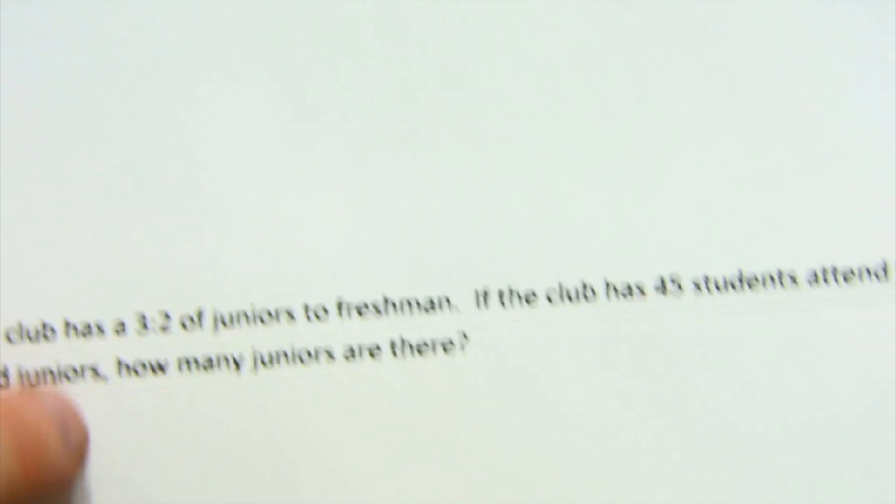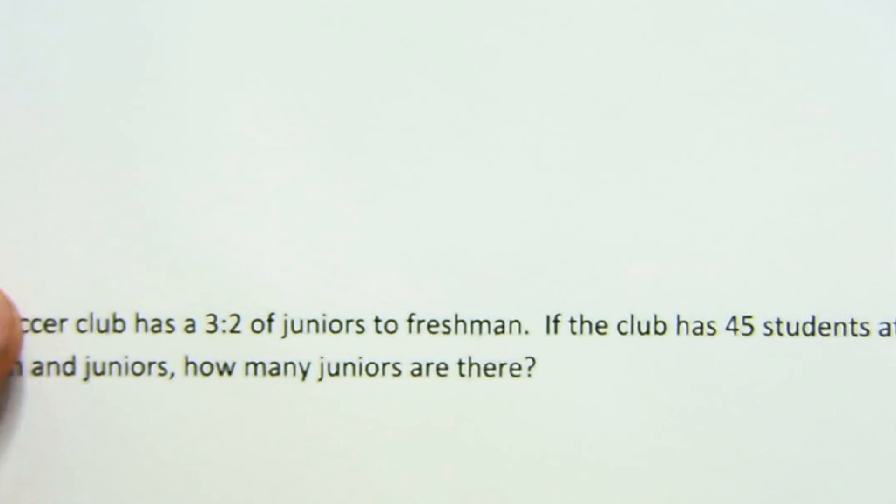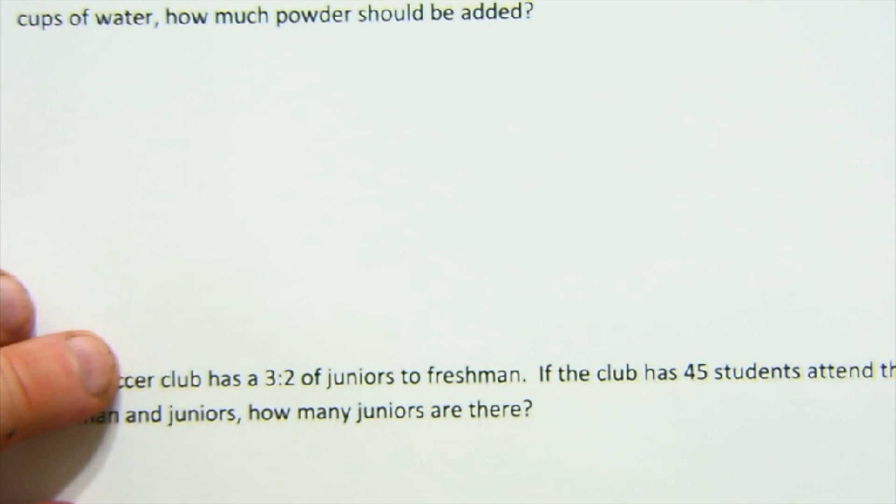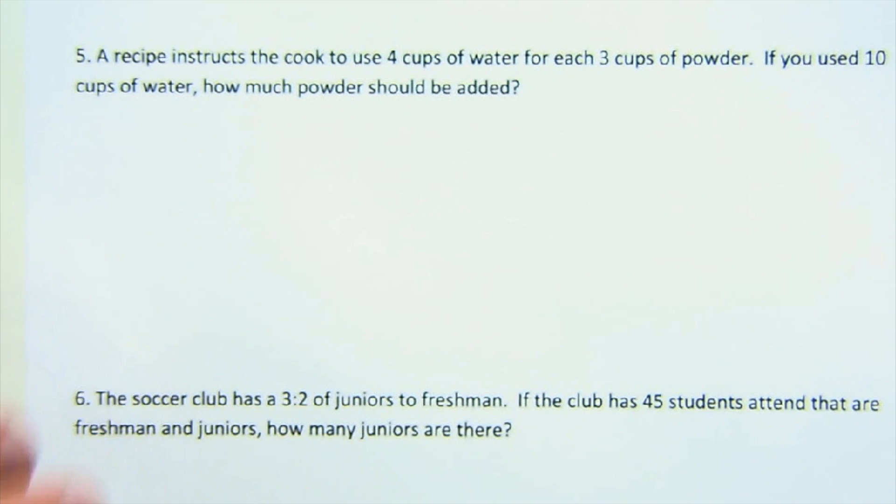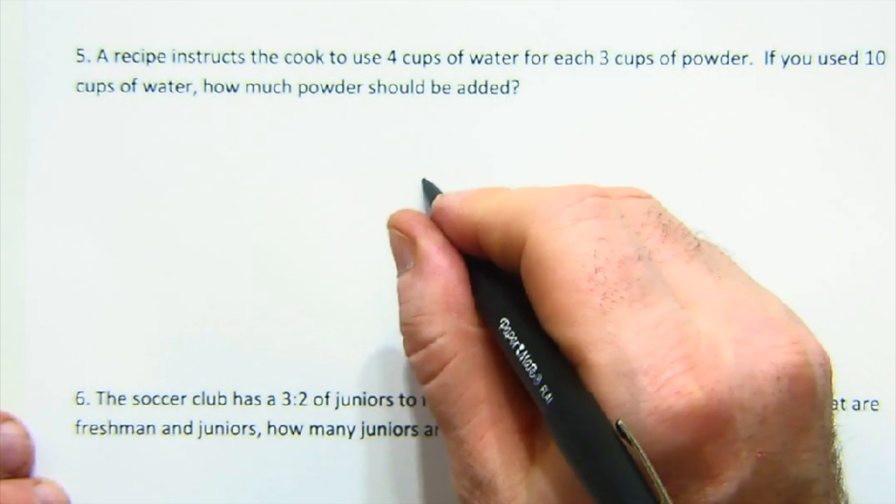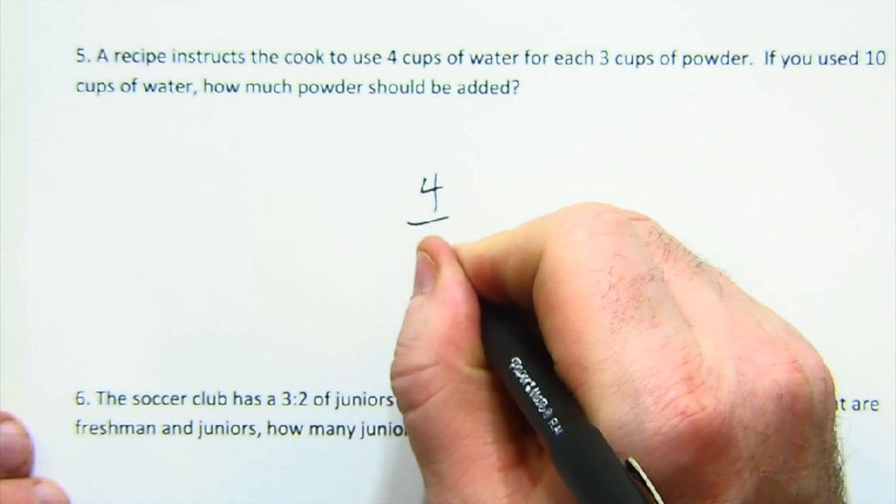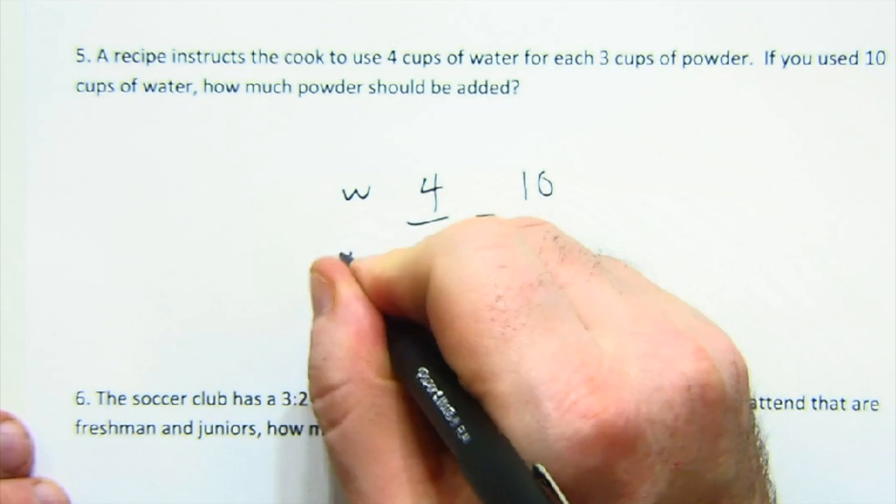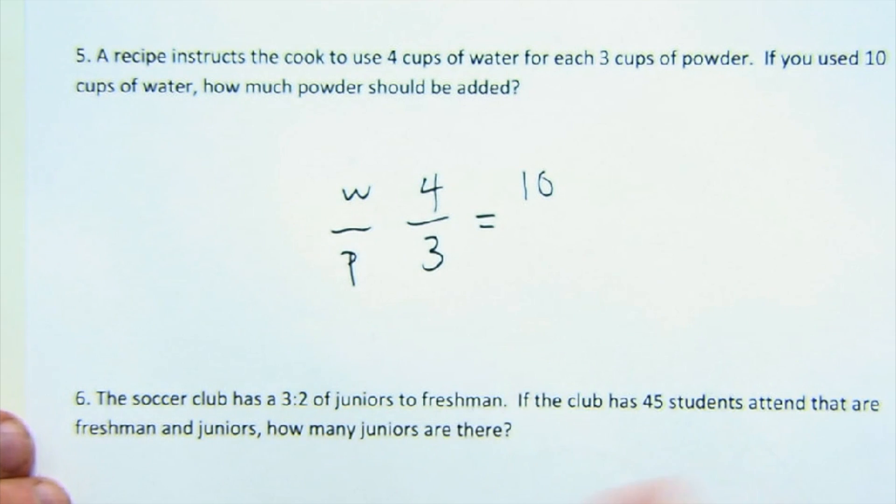One or two more quick ones here. A recipe has some cups water to powder and use 10 cups of water. That's pretty easy. Water to powder. Use 10 cups of water. Again, I always like to do this on the side, keep things going and find the powder.